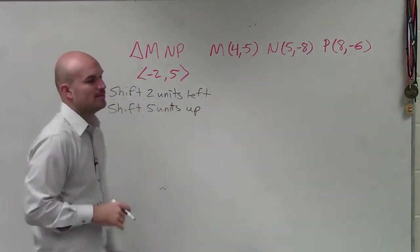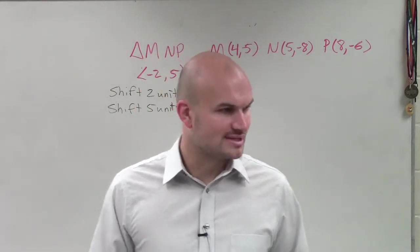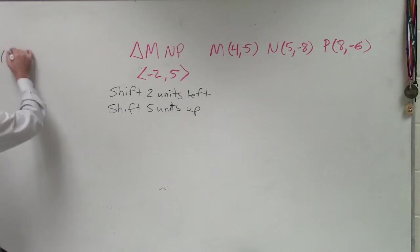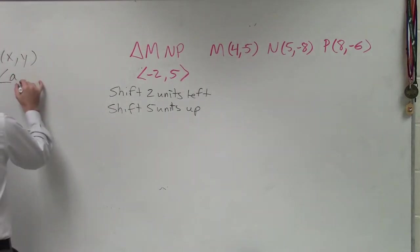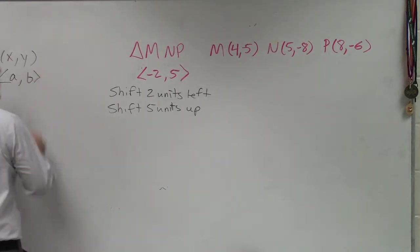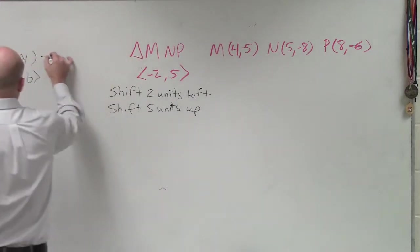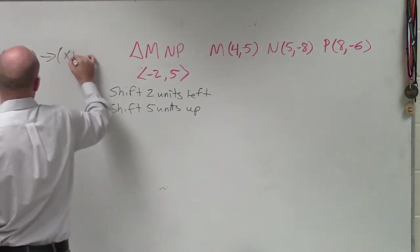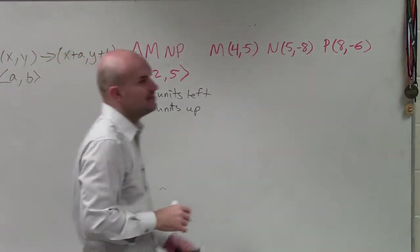Now for this one, what I'm going to do is I'm actually going to transform every single one of my points. And to do that, if you guys remember, if we have a point (x, y), and we have a transformation vector (a, b), to find my new points, what I simply do is I just add the a and the b.